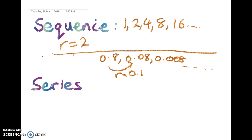Now a series is just a sequence where you add up all the numbers. So that first one, the sum of the first four terms will be s4, 1 plus 2 plus 4 plus 8. And in the second one s3 would equal 0.8 plus 0.08 plus 0.008.